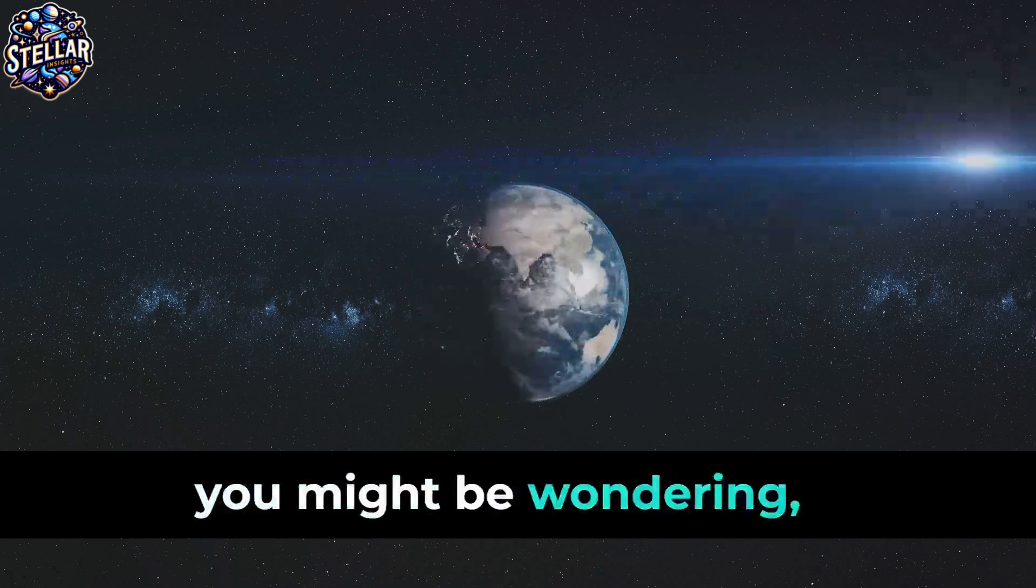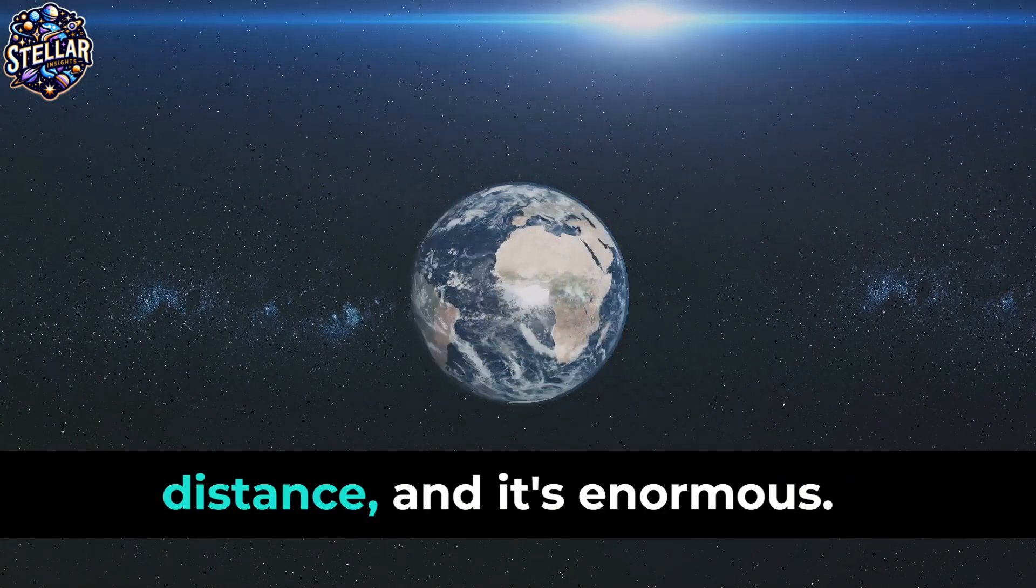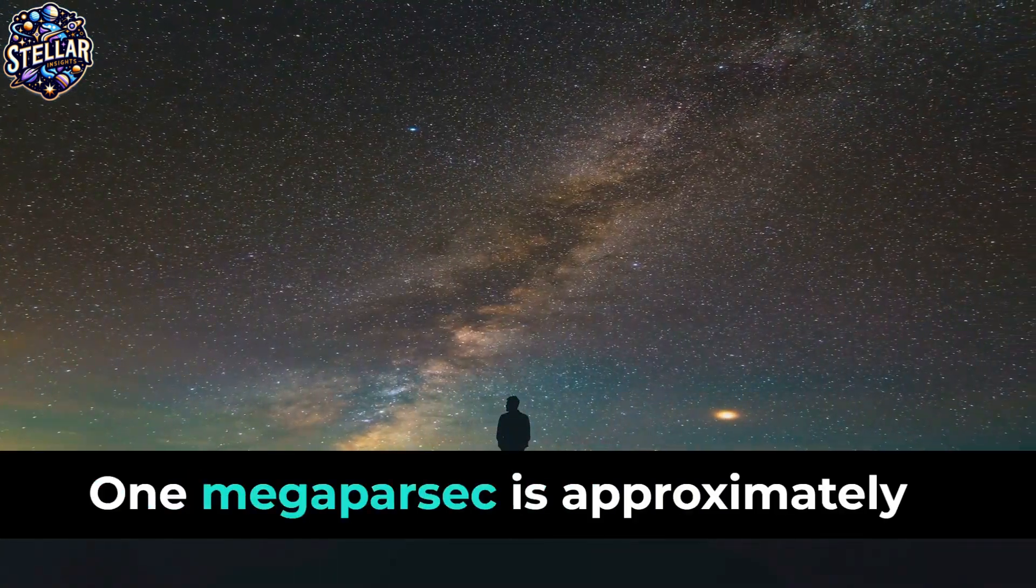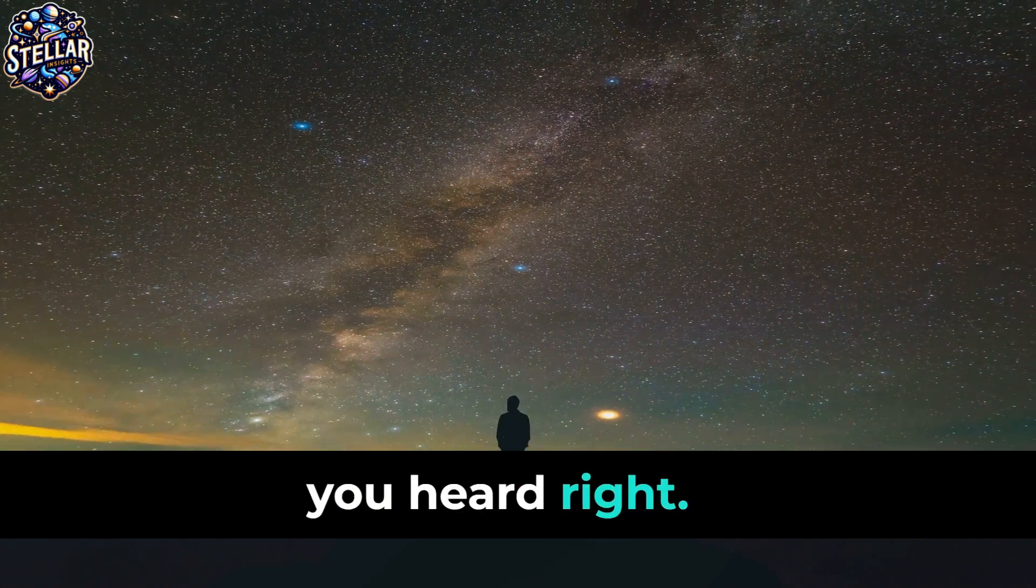You might be wondering, what on Earth is a megaparsec? It's a measure of astronomical distance, and it's enormous. One megaparsec is approximately 3.09 trillion kilometers. Yes, you heard right, trillion with a T.